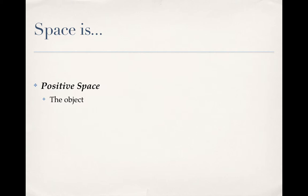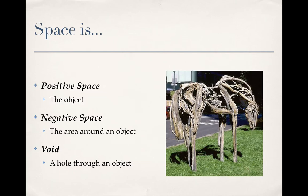Positive space would be the object that you're looking at, negative space would be the area around that object, and then a void is a hole in the object or like an indentation in the object.